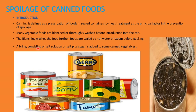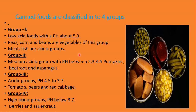A brine consisting of salt solution or salt plus sugar is added to some canned vegetables, and sometimes a sugar syrup is added to fruits during the canning process. The container is evacuated before sealing, usually by heating the headspace — the unfilled part of the container — or often by mechanical means. Canned foods are classified into four types based on their pH.